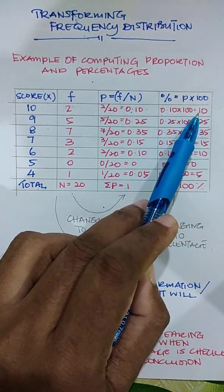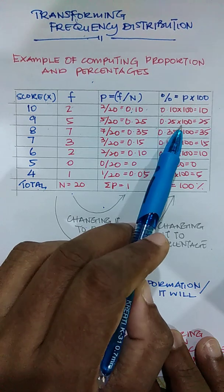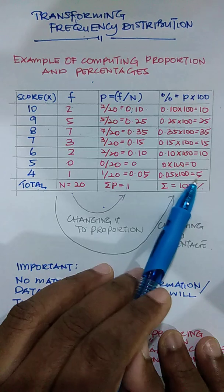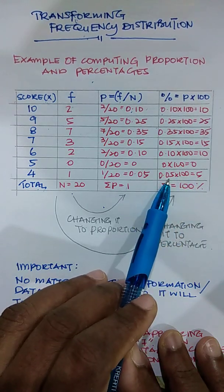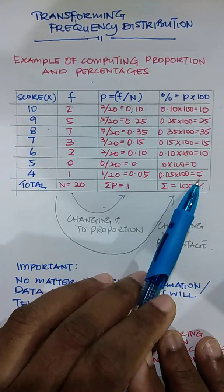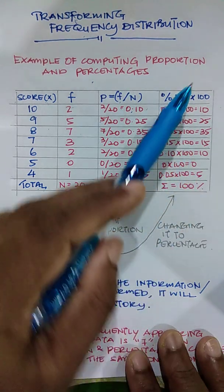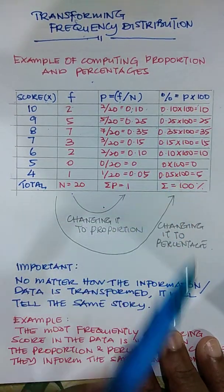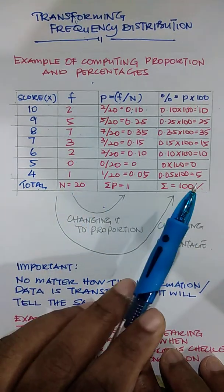So you will get 10%. 0.25 multiplied by 100, you get 25%. And so on until the last. 0.05 multiplied by 100, so you have 5%. When you add all the percentages, you will get 100%.